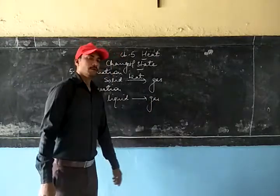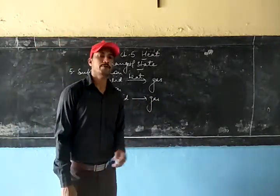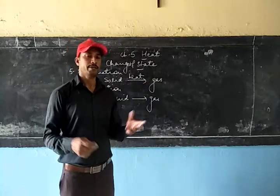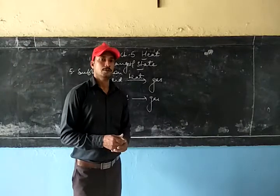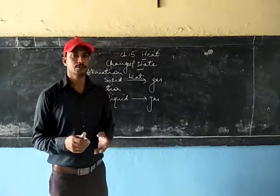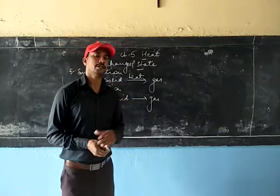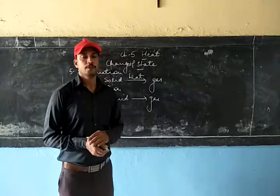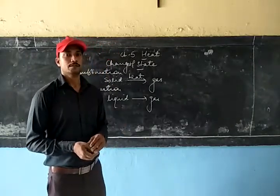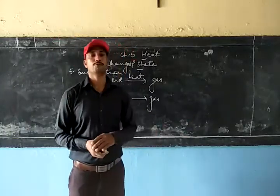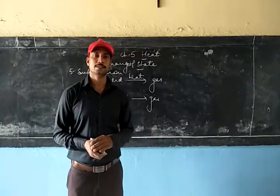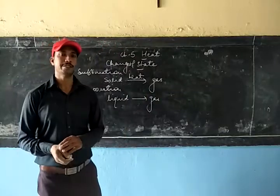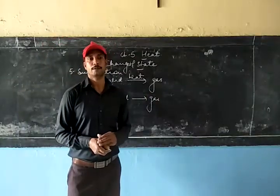The last process is evaporation. It is also a process where liquid changes into gas, but in this case the conversion takes place at any temperature. For example, clothes kept in the sun — the water in the clothes evaporates and the clothes dry. Small pools of water on the floor also dry due to evaporation. These are the different processes which result in the change of state of matter.